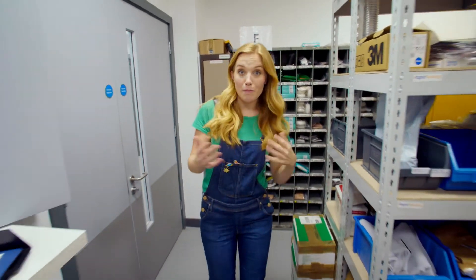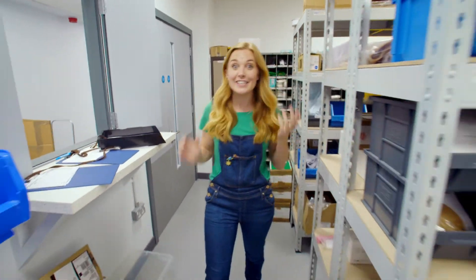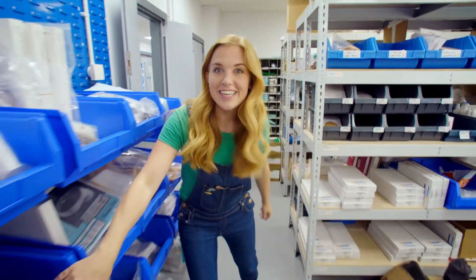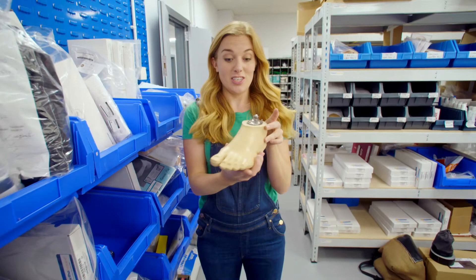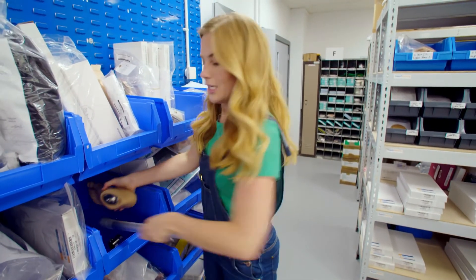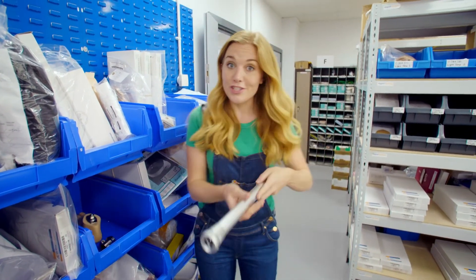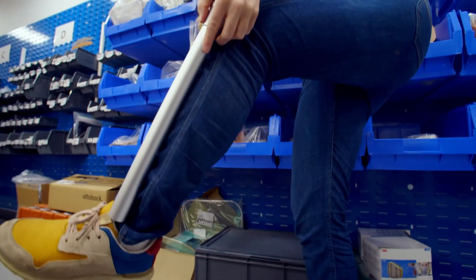The rest of the parts we need for our prosthetic leg are kept here in this storeroom. And here we are. This is the foot. And then this metal pole is going to be the shin. That's this part of the leg just here.